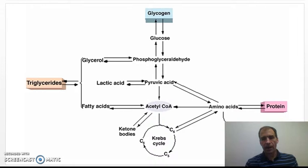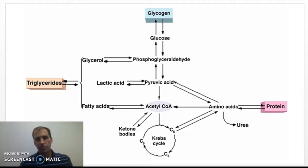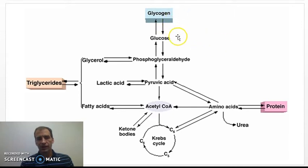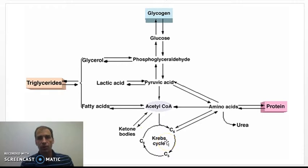Previously in class we talked about how carbohydrates are 4 kilocalories per gram, fats are 9 kilocalories per gram, and proteins are 4 kilocalories per gram. That's a rough estimate based on research on those three macronutrients, but let's get into how we know this and why these are different. Whatever we take in — glucose stored as glycogen, triglycerides, or amino acids — our body will find ways to utilize any of those macronutrients to enter glycolysis and the Krebs cycle and ultimately form ATP.